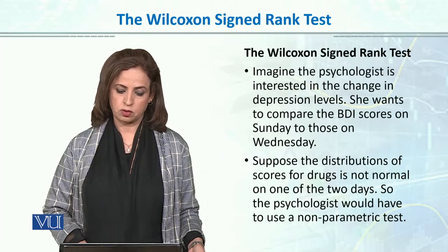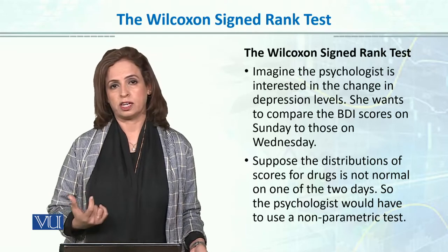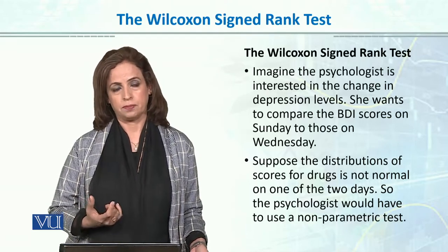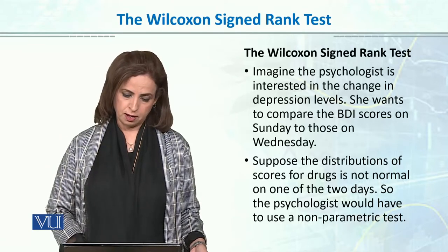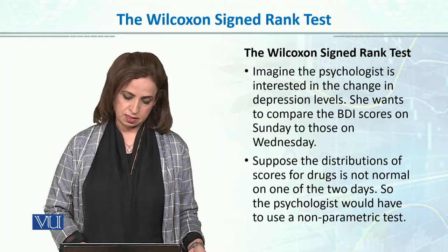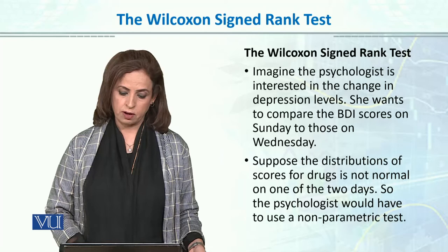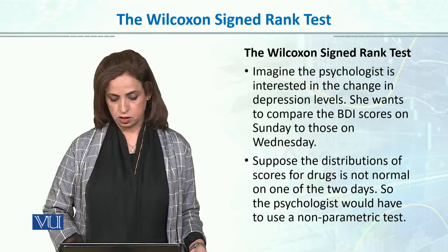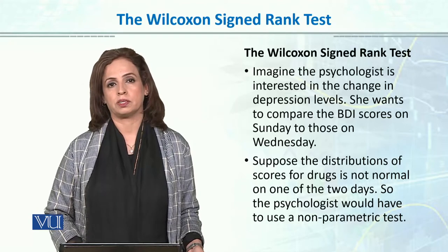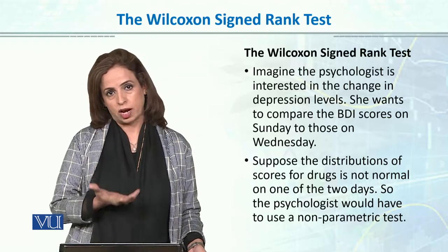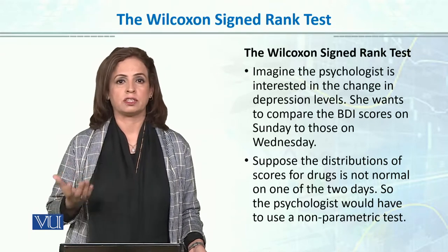Imagine a psychologist interested in change in depression levels. She wants to compare BDI scores on Sunday to those on Wednesday. You can use Wilcoxon signed rank test. Suppose the distribution of scores is not normal on one of the two days, so the psychologist would have to use a non-parametric test, because the depression scores of the population are not normally distributed.